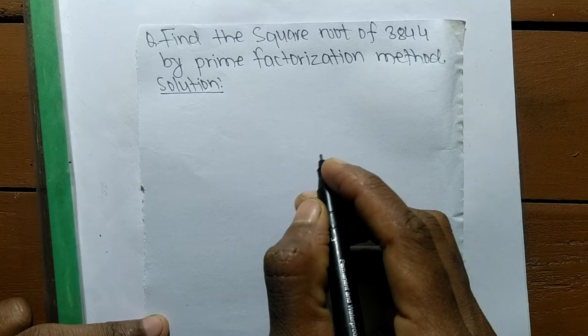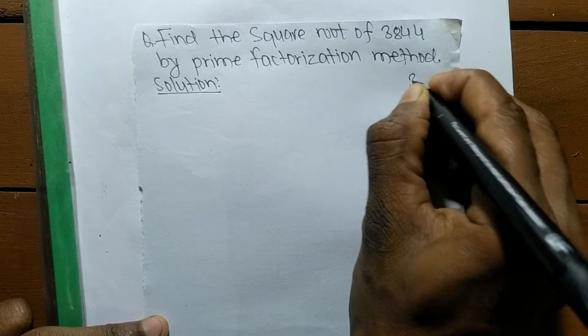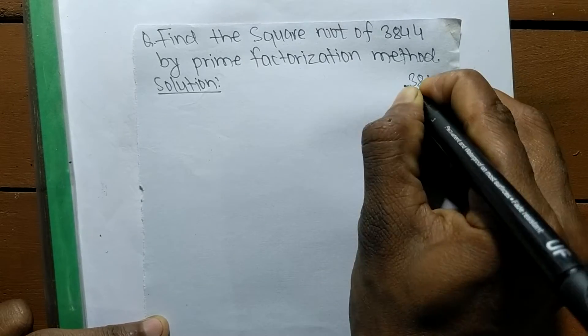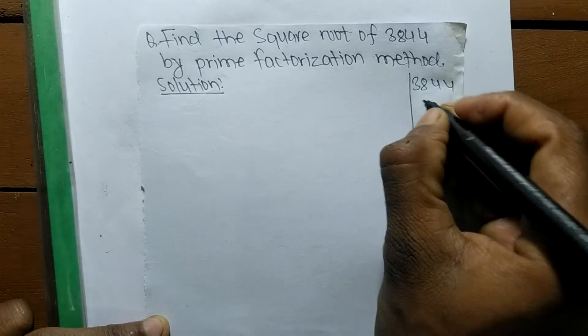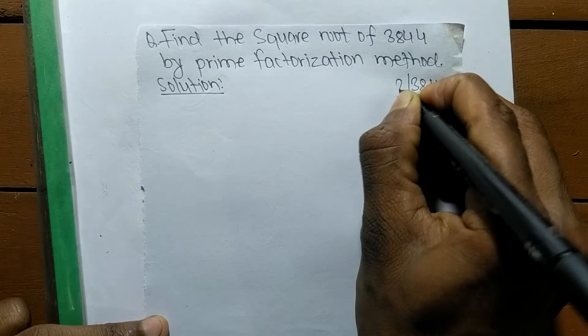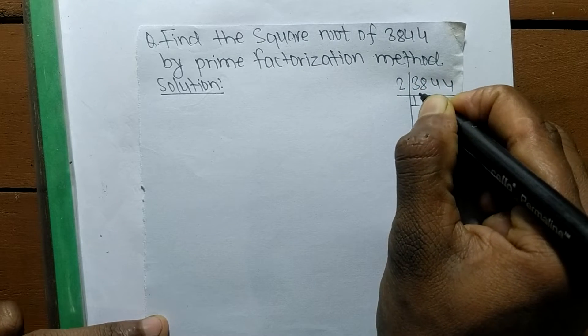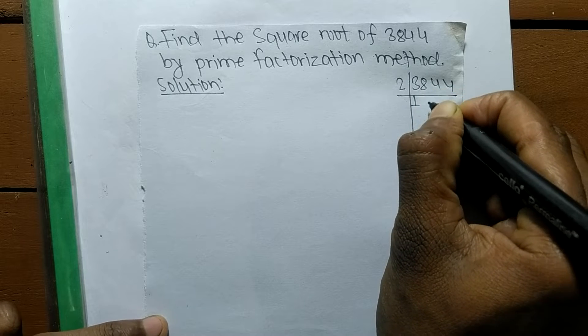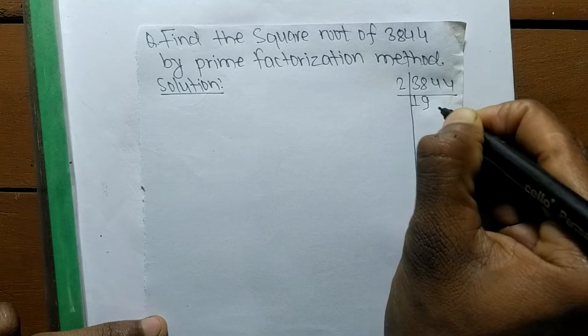The given number here is 3844, so now we find out its prime factors. It is 2 times 1 means 2, remaining is 1, 1 8 18, so 2 times 9 means 18.